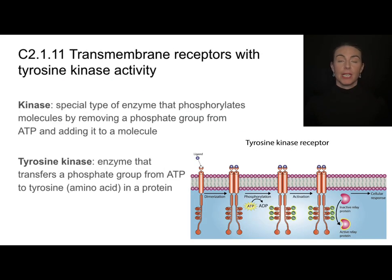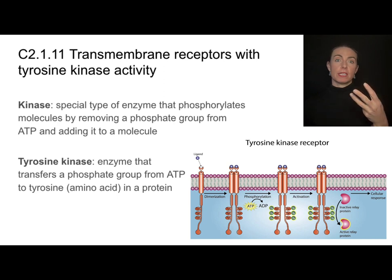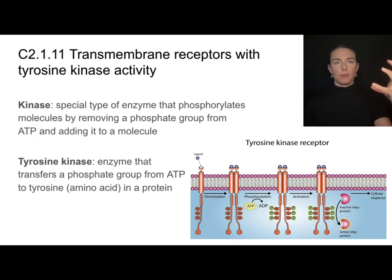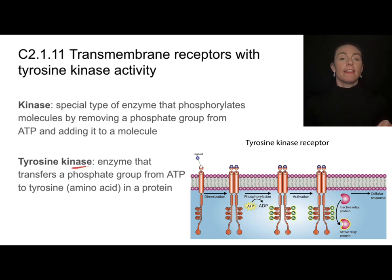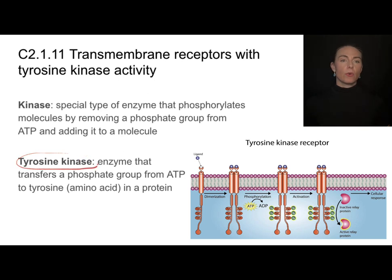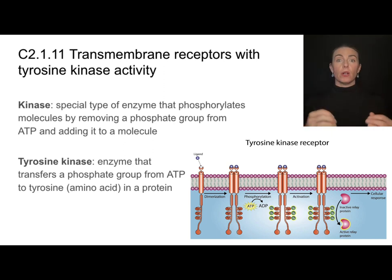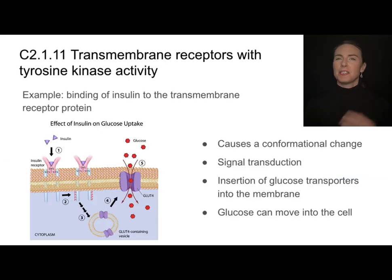So far we've talked about transmembrane receptors in nerve cells affecting membrane potential, and G proteins. Now let's talk about a third type of transmembrane receptors—those associated with tyrosine kinase activity. A kinase is a special type of enzyme—note the -ase ending—that phosphorylates a molecule, getting that phosphate group from ATP. It pops off a phosphate group from ATP and sticks it onto a molecule. Specifically, tyrosine kinase sticks that phosphate group onto tyrosine, which is a specific amino acid, wherever it falls within a polypeptide chain.